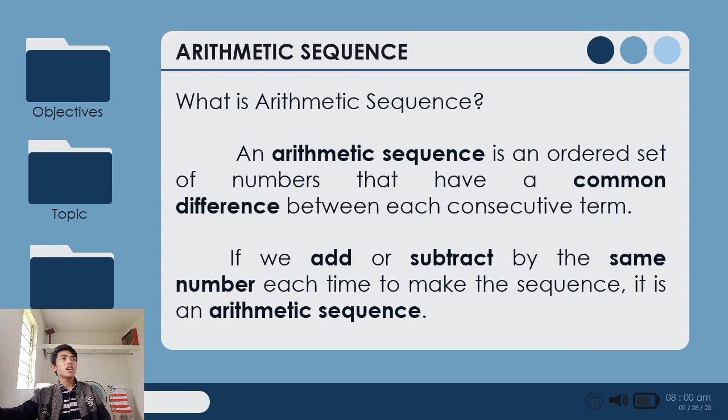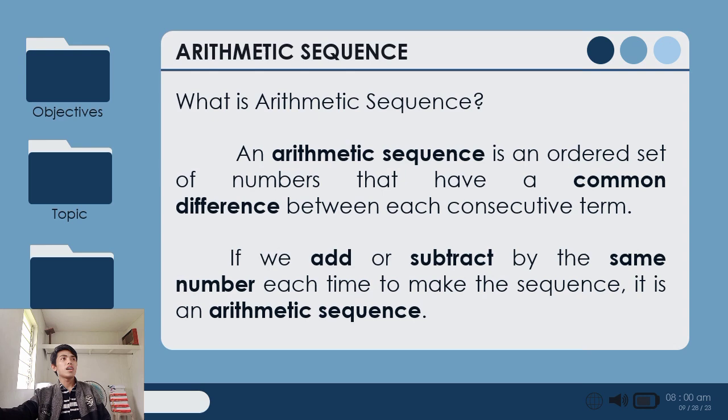So dito na tayo sa ating lesson, arithmetic sequence. Yun yung naisolve nyo kanina. So what is arithmetic sequence? Nakakalagay dito, an arithmetic sequence is an ordered set of numbers that have a common difference between each consecutive term. Pagka sinasabi natin yung arithmetic sequence daw ay mayroong common difference between each consecutive terms. Base na rin sa pinanood natin kanina na video wherein na-explain doon kung paano naisolve yung arithmetic sequence base dun sa mga terms nila.